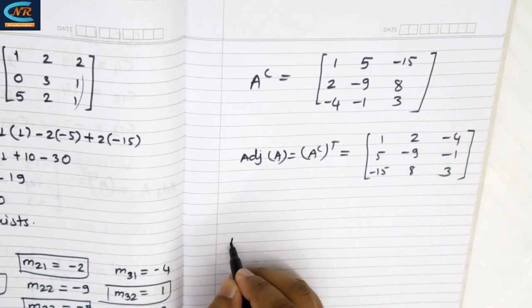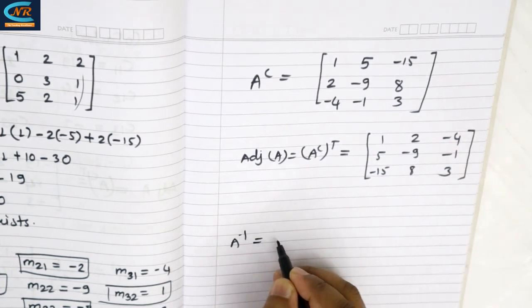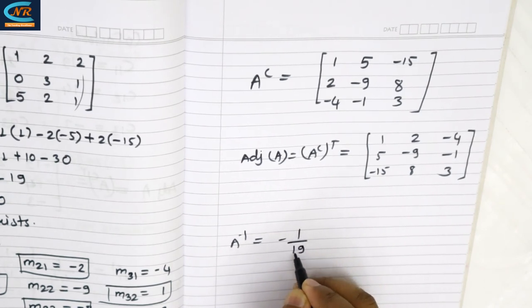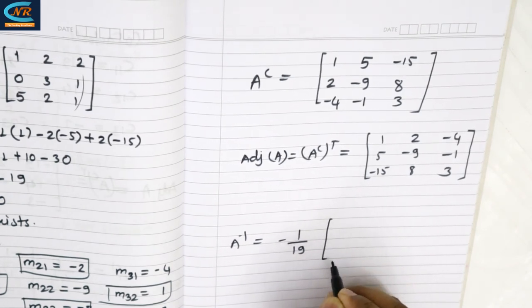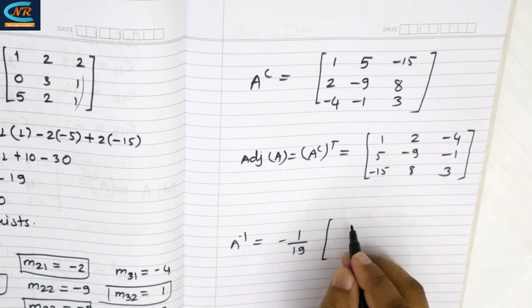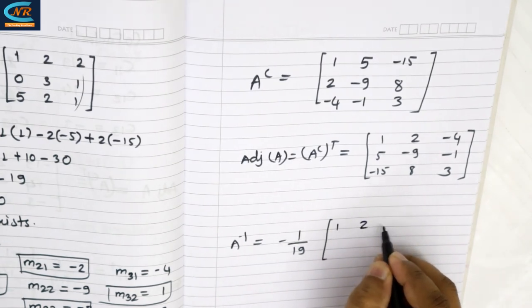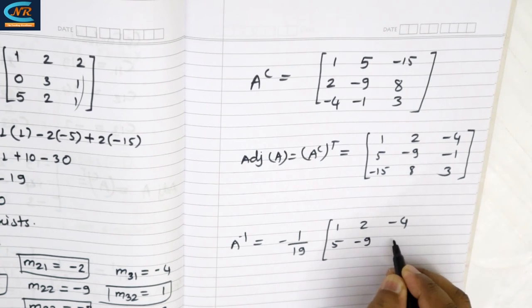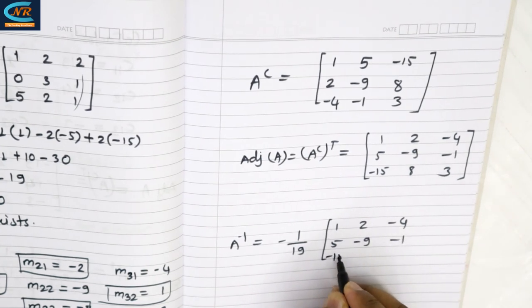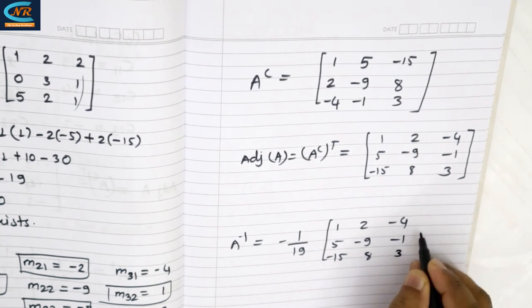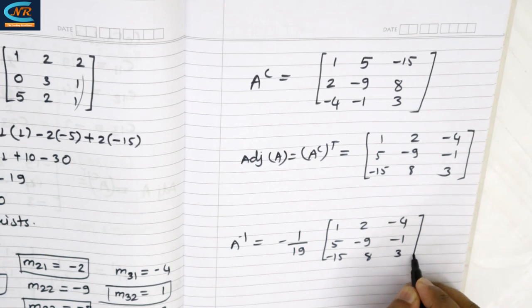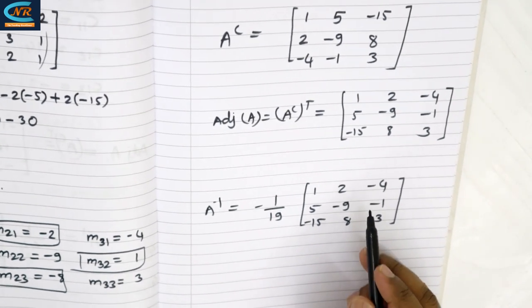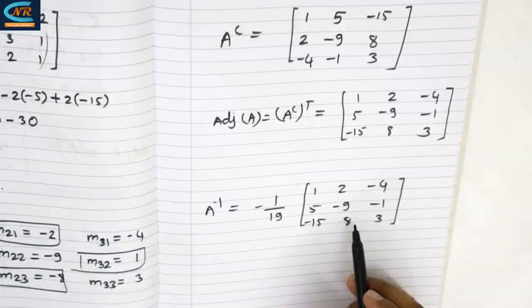A inverse is equal to minus 1 upon 19 into the adjoint of A, giving the matrix: 1, 2, minus 4; 5, minus 9, minus 1; minus 15, 8, 3. So this is the inverse for the given matrix A.